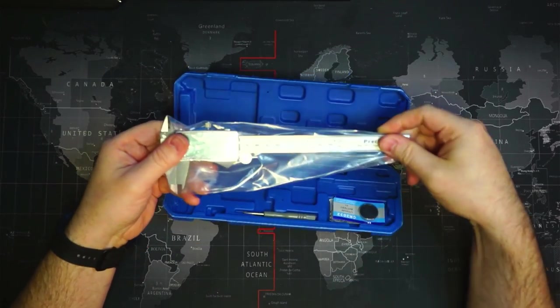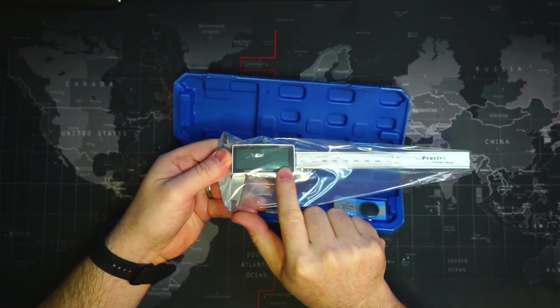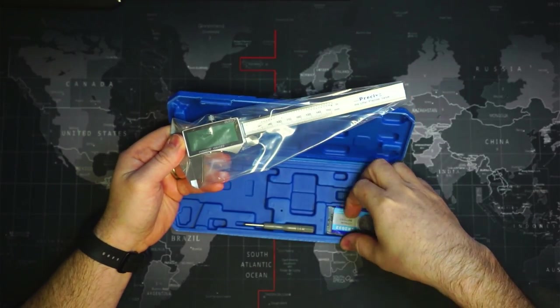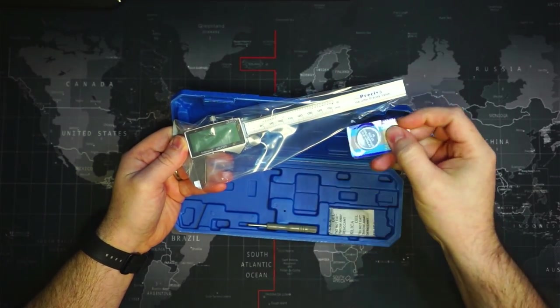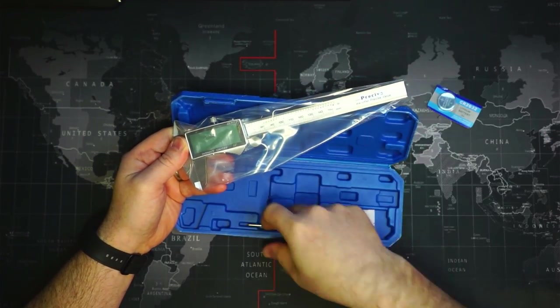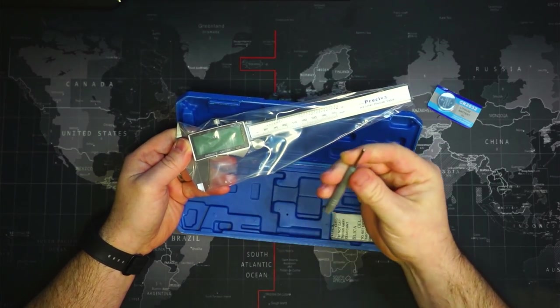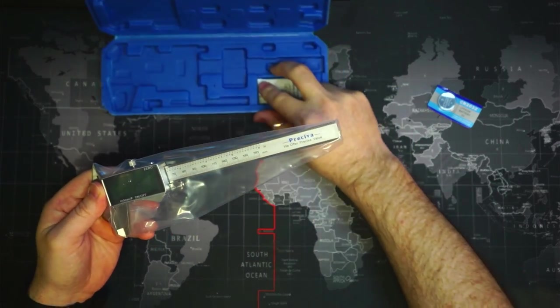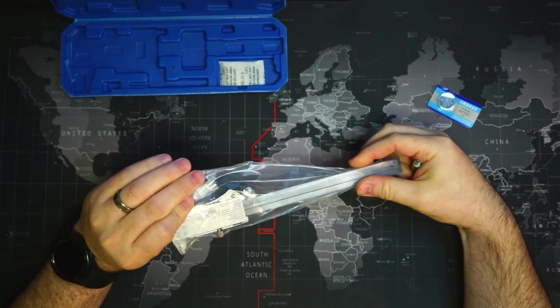Okay, so we get the calipers. Nice, large display. We get a spare battery. Excellent. And we get a screwdriver. I'm sure this is what we will use to change the battery if we need to.